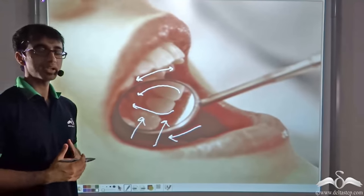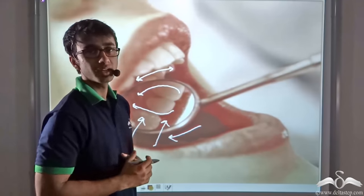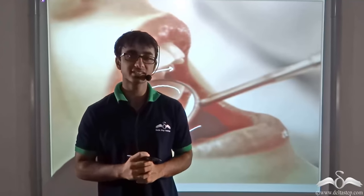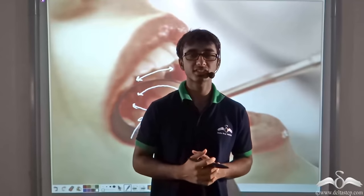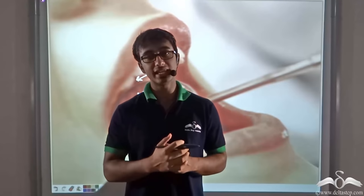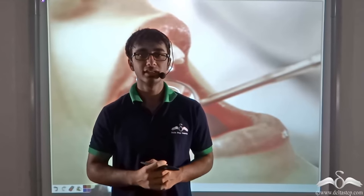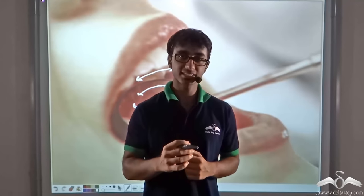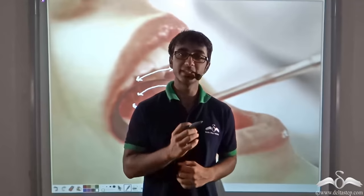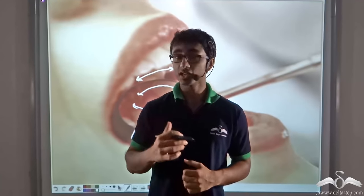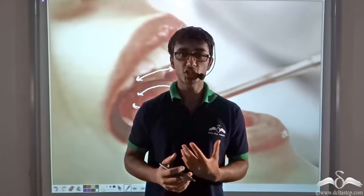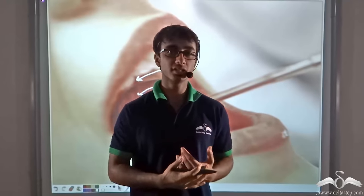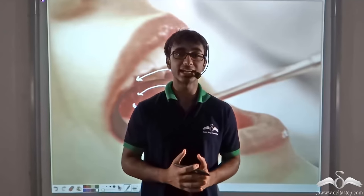So wrapping up and recapitulating, what did we learn? We learnt that when an object is placed in front of a concave mirror at different positions, different characteristics of the image are obtained. The characteristics of the image depend on the place where the object has been kept. With a concave mirror, the image obtained can be real or virtual depending on where the object has been placed.